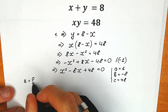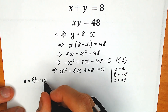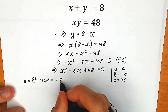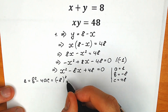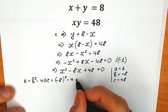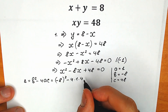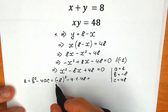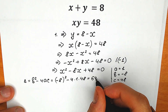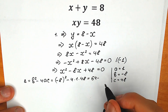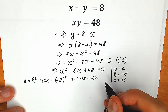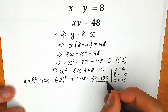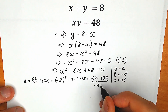The discriminant equals b squared minus 4ac. So we have (minus 8) squared minus 4 times 1 times 48. It looks like our discriminant will be negative — let's check. We have 64 minus 192, which gives us 64 minus 192 equals minus 128. So our discriminant equals minus 128.